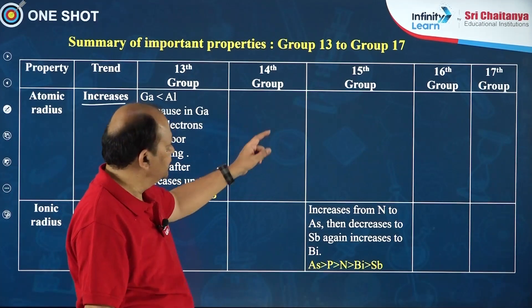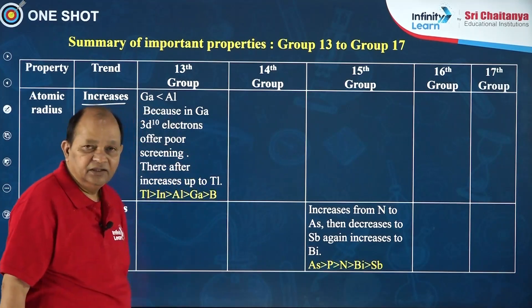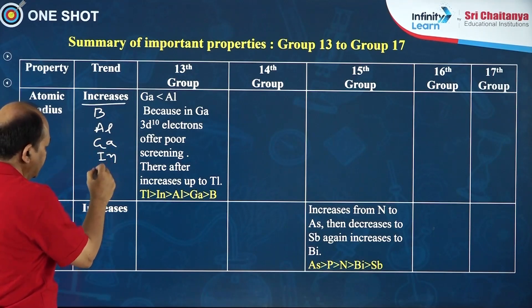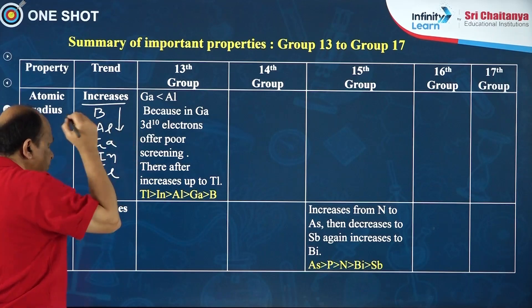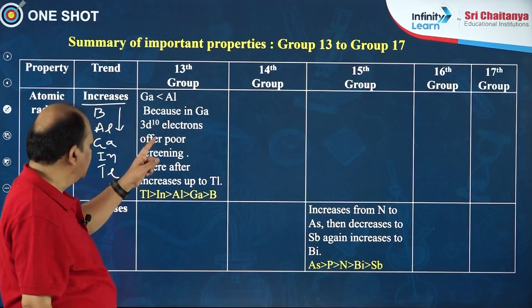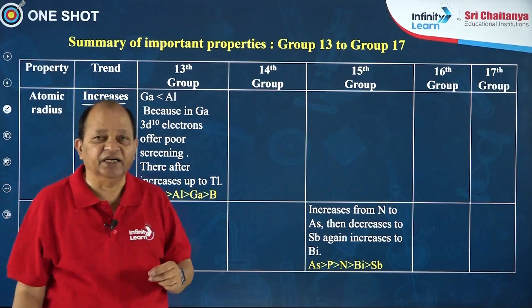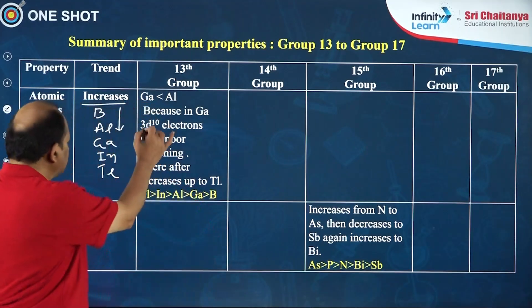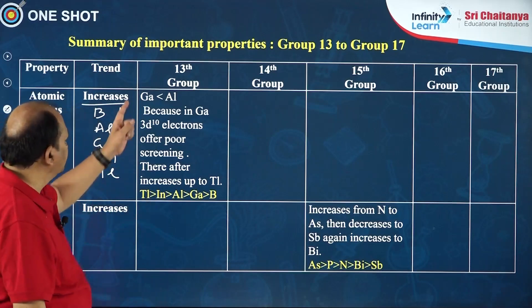The trend is followed for groups 14, 15, 16 and 17, but we find a discrepancy in group 13. The elements of group 13 are boron, aluminium, gallium, indium and thallium. Here the atomic radius increases from boron to aluminium, but from aluminium to gallium the atomic radius is decreasing. The reason is because in the case of gallium, due to the presence of 3d10 electrons, there will be poor shielding effect, thereby the nucleus exerts strong attraction on the outermost electron, and size decreases. Afterwards there will be an increase in size, so this is the actual order of atomic radii of group 13 elements.